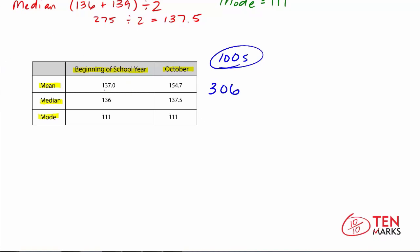Looking at the mean: we had 137.9 calories on average at the beginning of the school year, and in October we have 154.7. Having this high outlier pulled the mean almost 17 calories higher — the outlier is dragging the mean up because it is so much higher than the rest of the data. For the median: it changed only a little, from 136 to 137.5 — just 1.5 calories more in October — meaning an outlier doesn't have a great effect on the median. For the mode: in both cases it is 111, and outliers do not affect the mode at all.